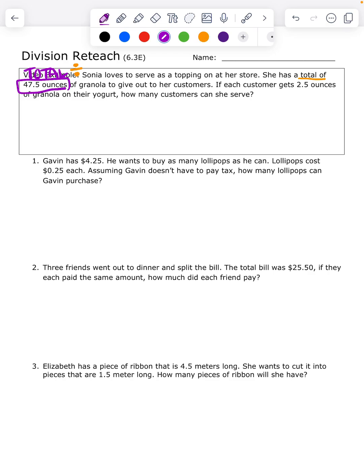So we're going to take our total of 47.5 and we're going to divide by 2.5. And again, you could write it as a fraction 47.5 divided by 2.5. I always like to check to make sure I can't cross any zeros off. And this is a great way to label.